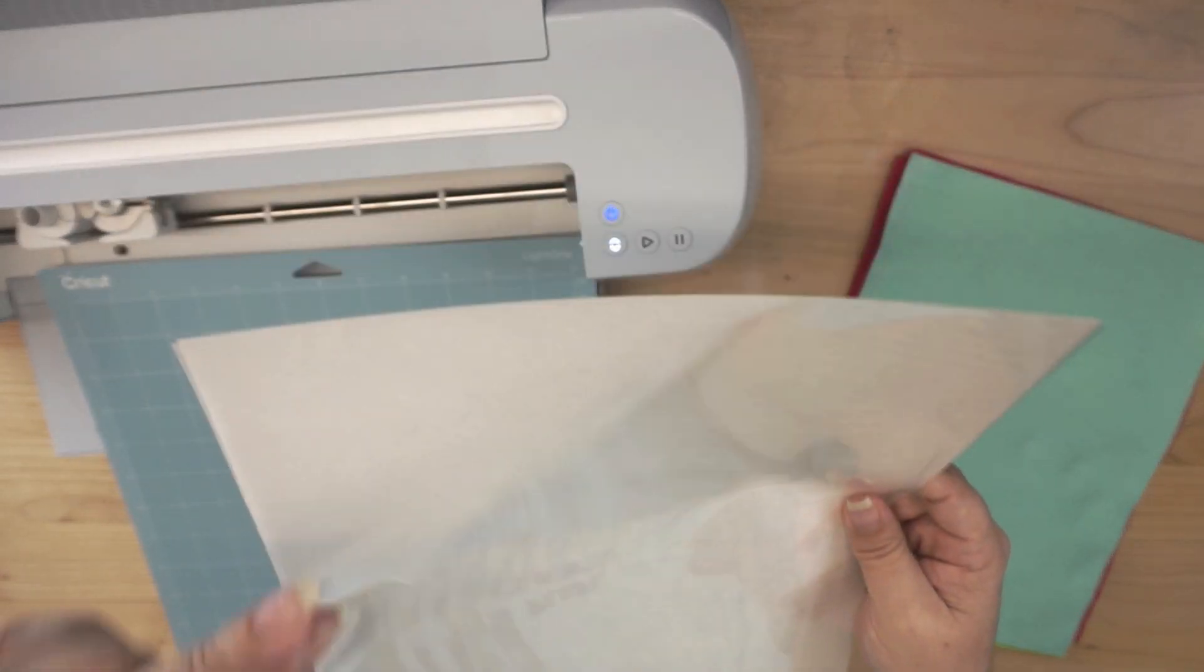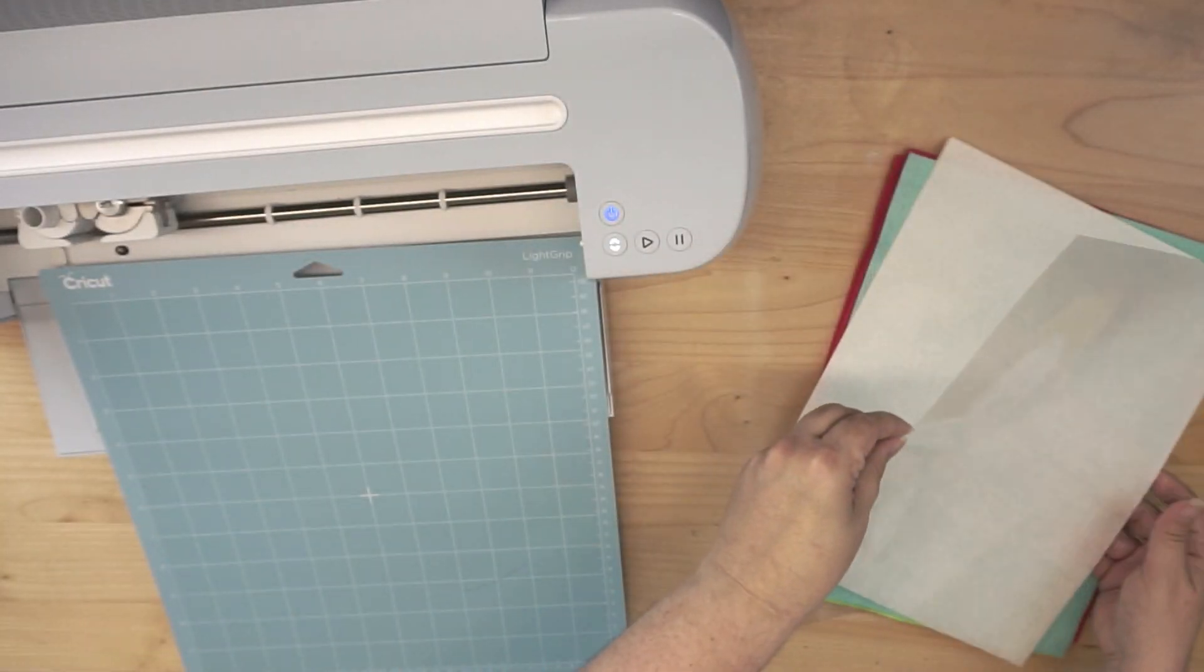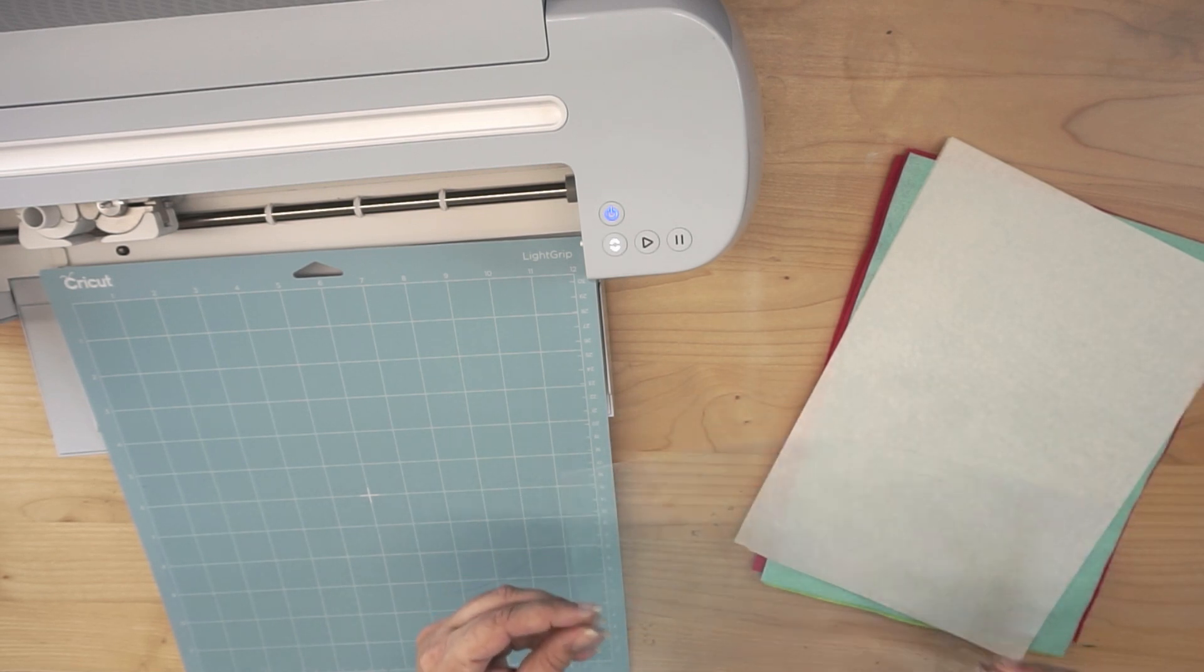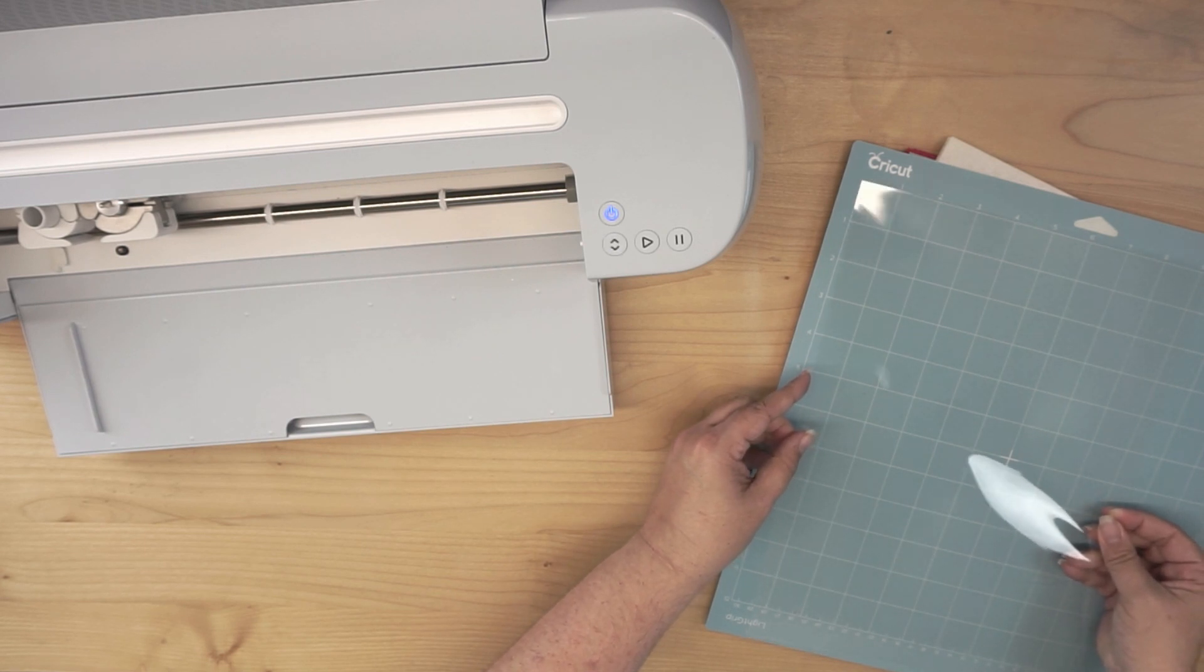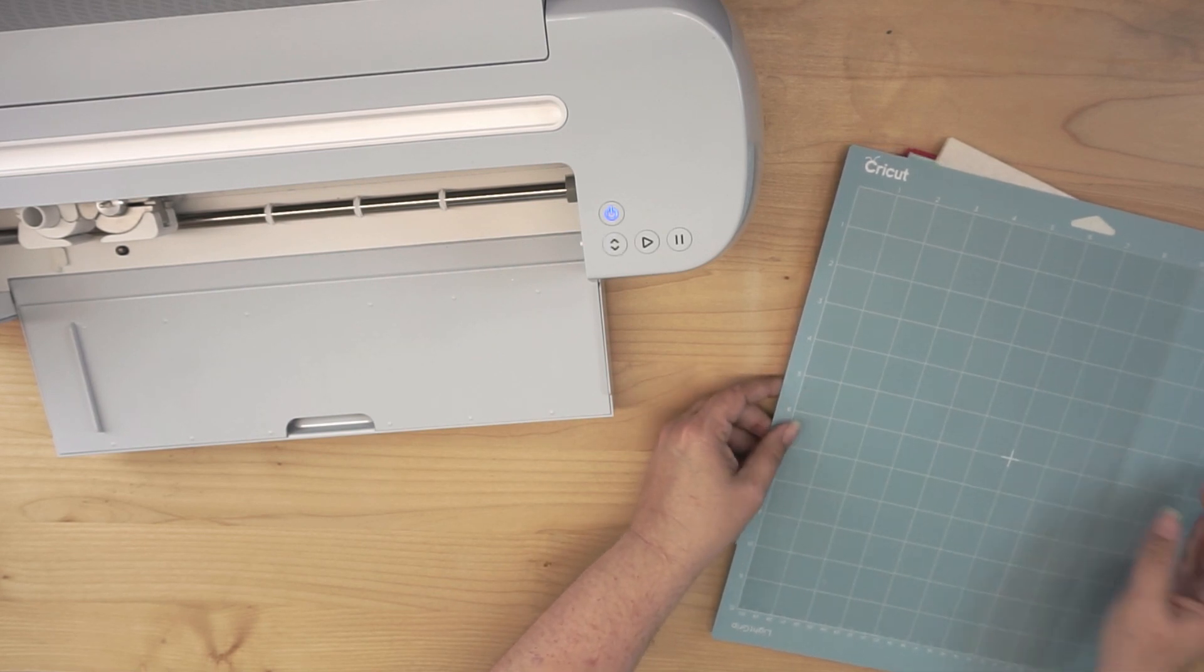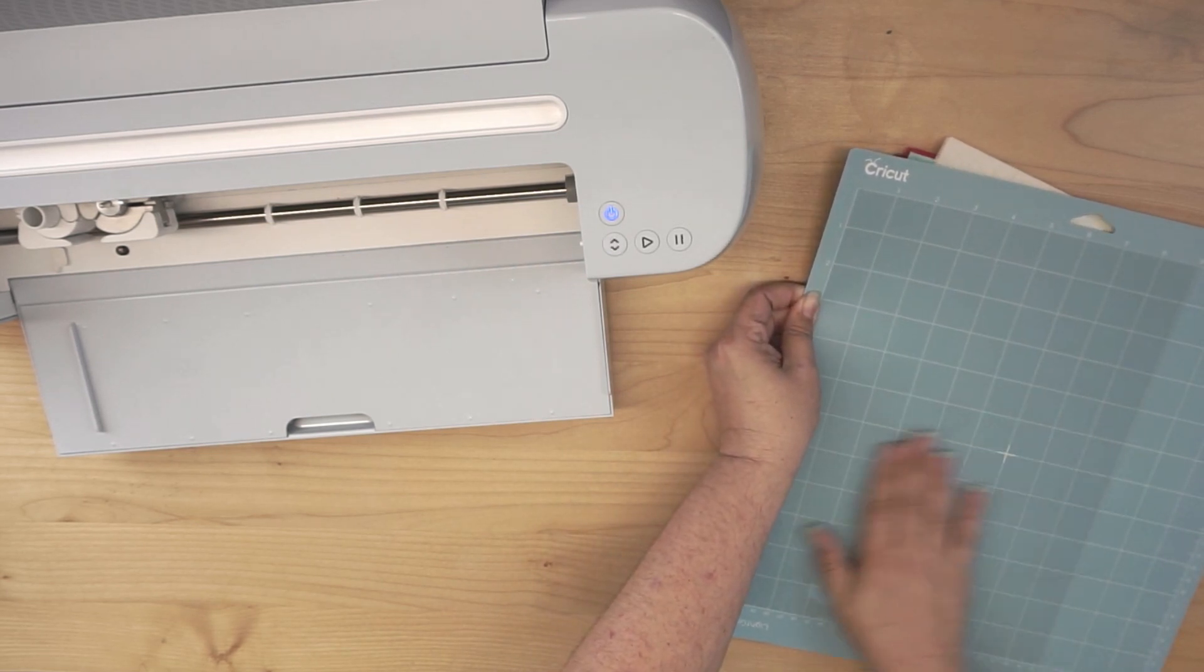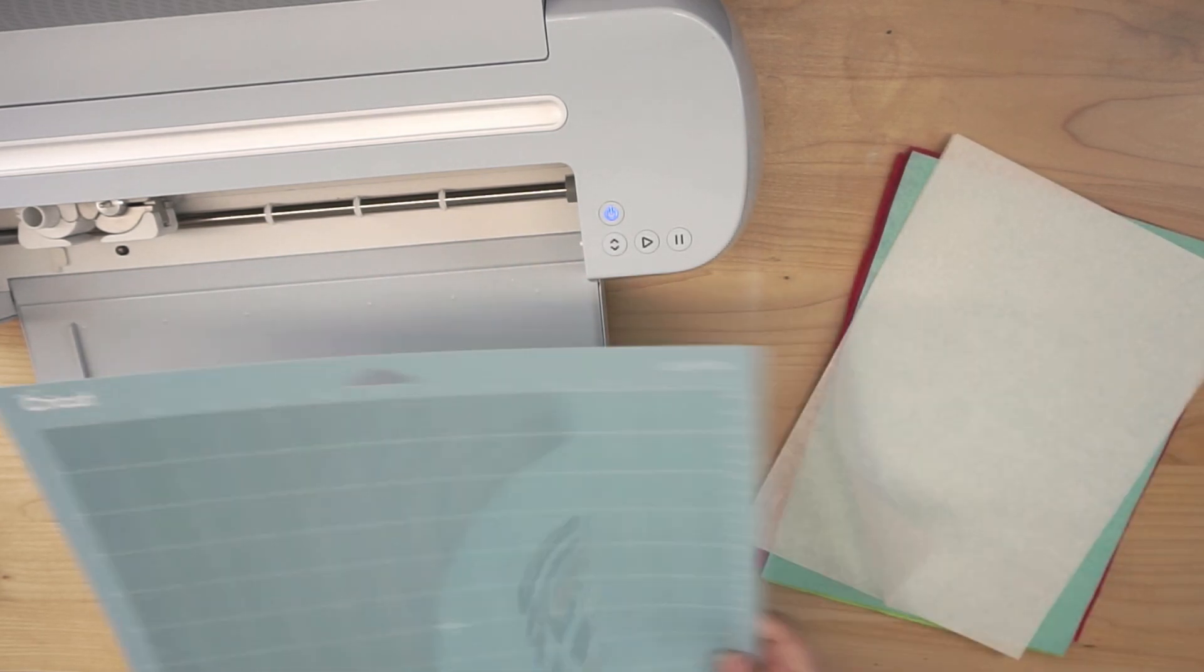So what they are is this nice clear film, and you can cut it using your Cricut or Silhouette cutting machine. So I'm going to go ahead and just apply it on the mat, because we have already set up our design. Smooth it down, and then we will load it up.